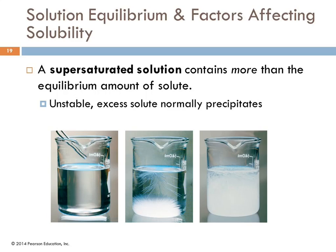A supersaturated solution contains more than the equilibrium amount of solute. On the surface this seems like an impossibility — it is definitely unstable. The way you can make a supersaturated solution is to heat the solution. For most solids, heating will increase the amount that will dissolve. Then if you let it cool down very carefully, the concentration gets higher and higher, almost like it doesn't realize it shouldn't still be in solution. But if you disturb it, it will all precipitate out.